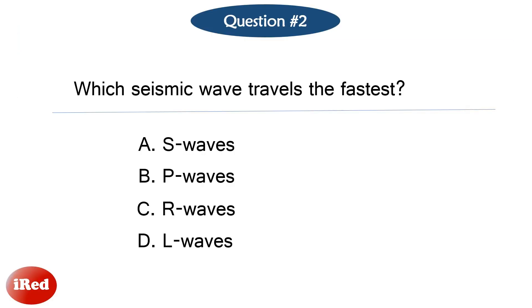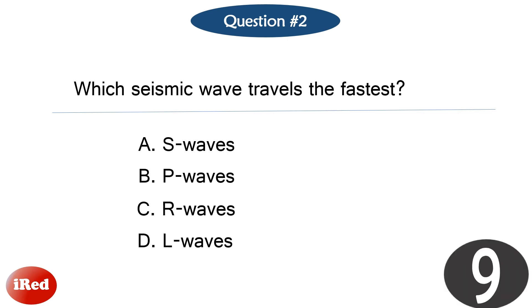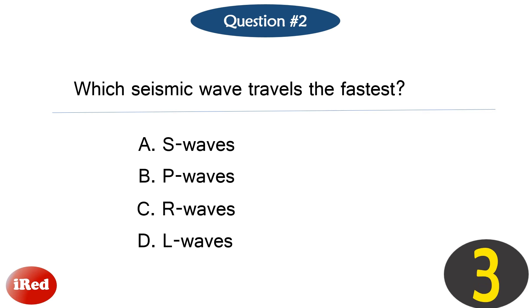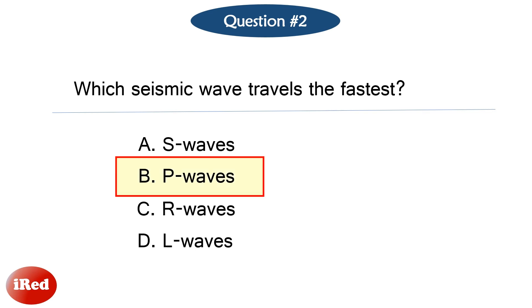Question number two. Which seismic wave travels the fastest? The correct answer is letter B, P waves.